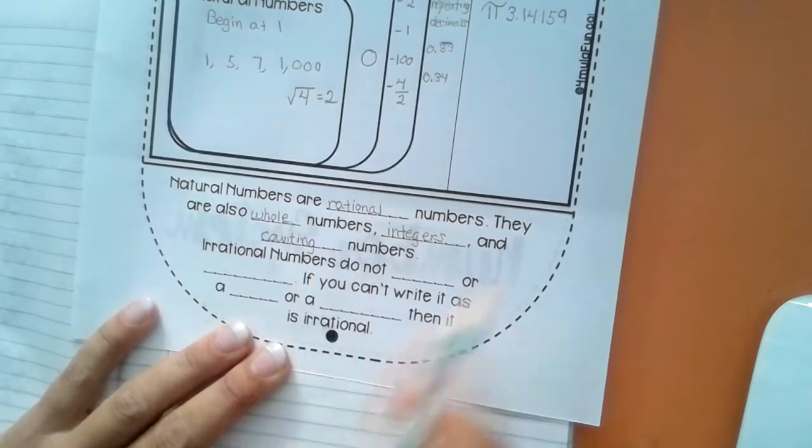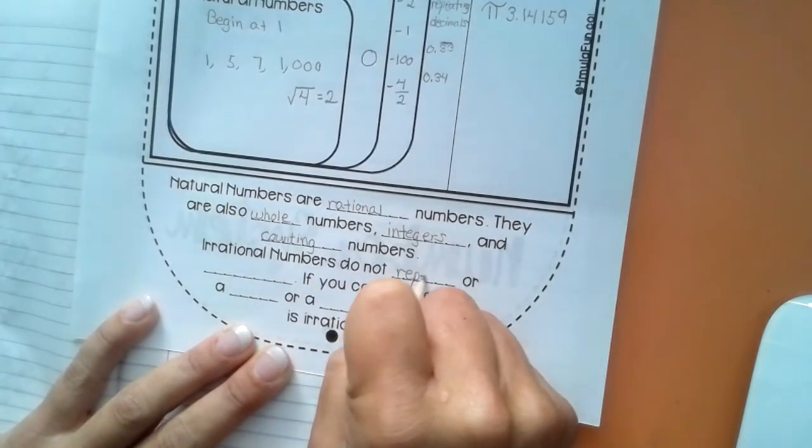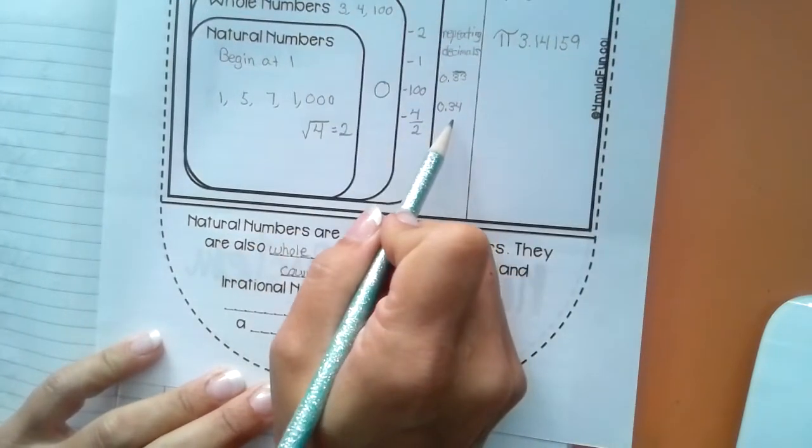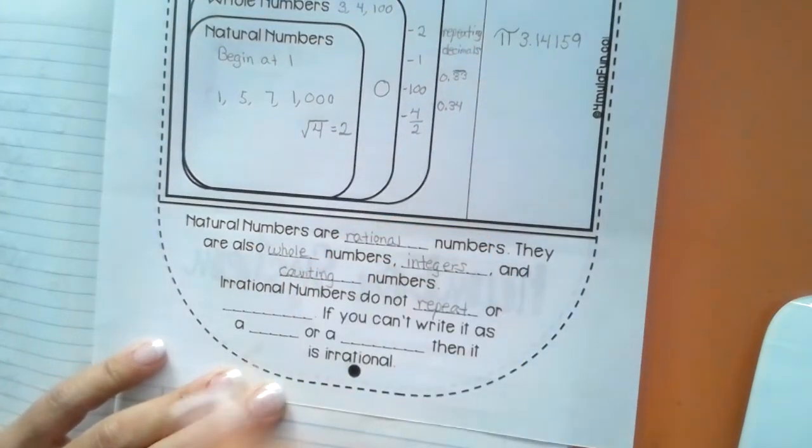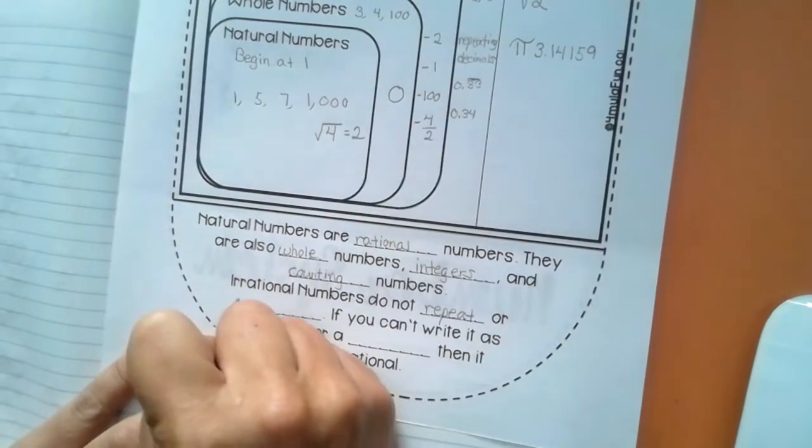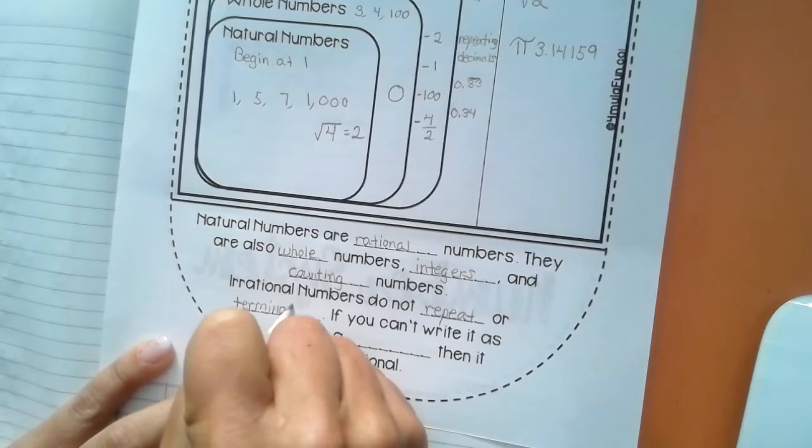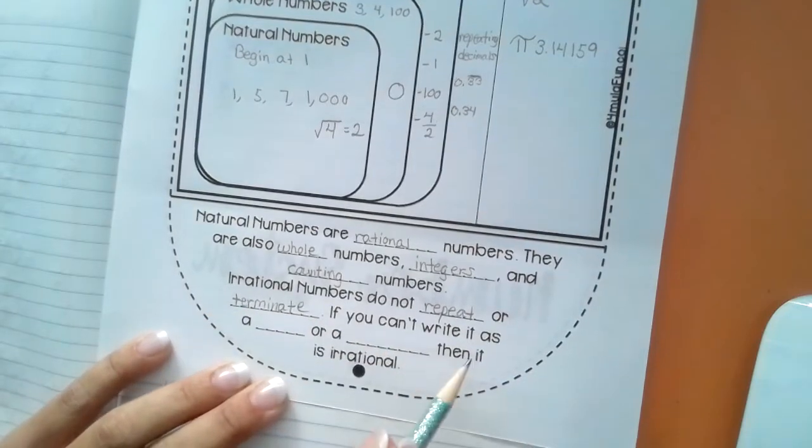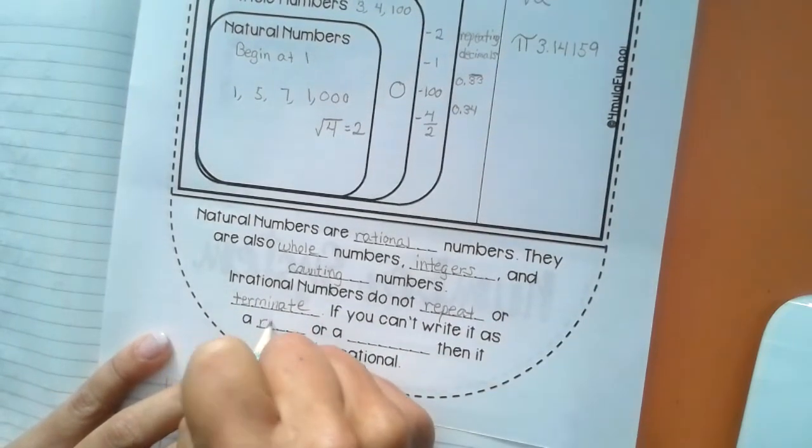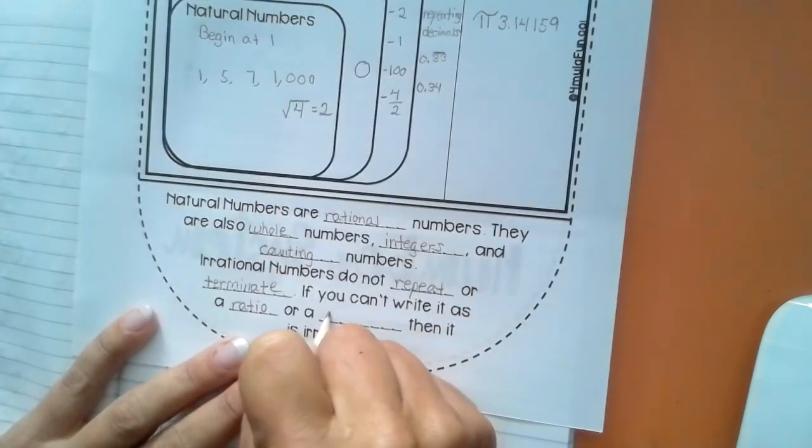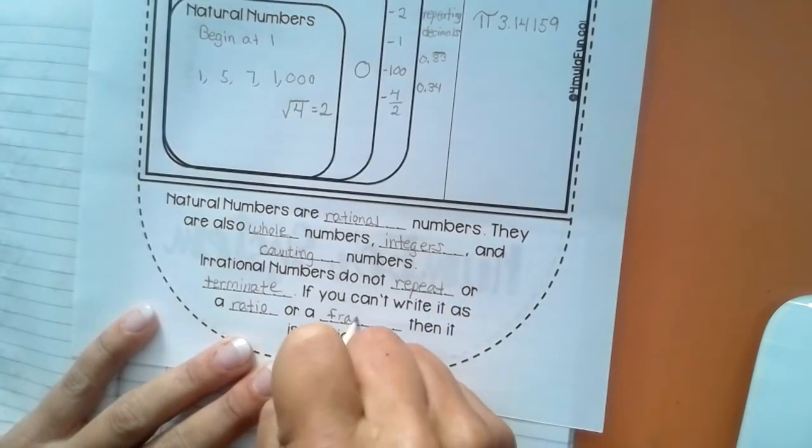Irrational numbers do not repeat or terminate. So that one that stopped in the hundredth place, that's a terminating decimal. If you can't write it as a ratio or a fraction, then it is irrational.